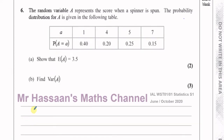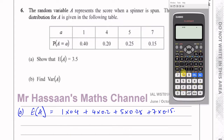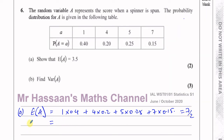The expected value of A is where you multiply each of the outcomes by its probability and add them together. So you have 1 times 0.4, plus 4 times 0.2, plus 5 times 0.25, plus 7 times 0.15, which gives us 7 over 2, which is 3.5 as required. That's the answer for part A.